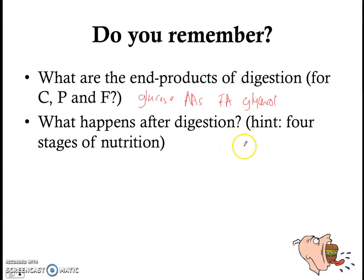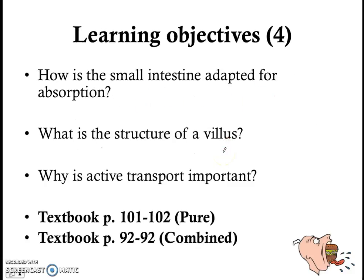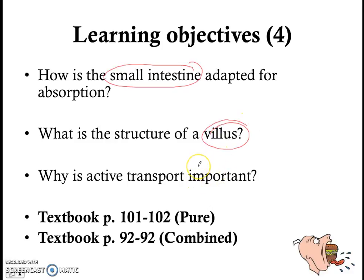I hope you also remember what is the stage that happens after digestion — and I hope that you remember that it is absorption. So I hope that in this video you'll be able to absorb a lot of information and learn the topic well. We know that absorption happens in the small intestine, and in this video we'll be talking about how absorption happens as well as the structure of the small intestine and this thing called a villus, which plays a role in absorption.